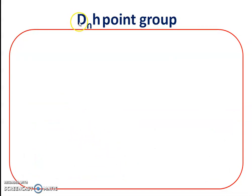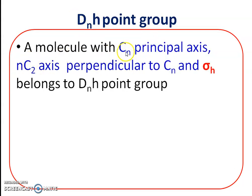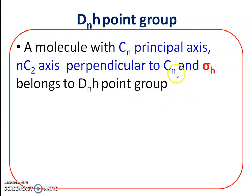To recap DnH: a molecule with a Cn principal axis, n number of C2 secondary axes perpendicular to Cn, and a horizontal plane belongs to the DnH point group. In addition, the molecule may contain vertical planes, a center of inversion, or improper rotational axes, but the prime requirement is Cn, n C2 axes perpendicular to Cn, and a horizontal plane.